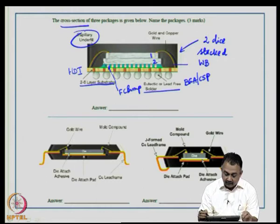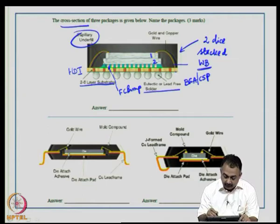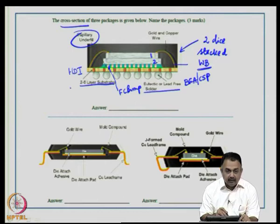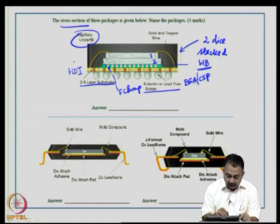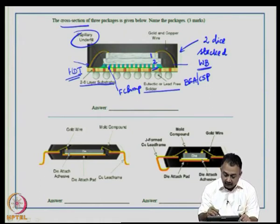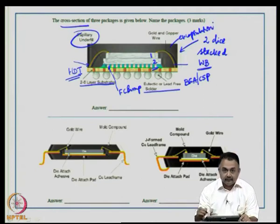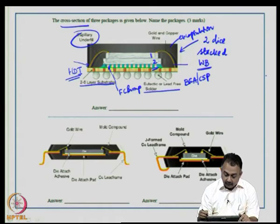The bumps are flip chip bumps, and underfill is used, confirming that die number 2 is a flip chip. Die number 1 is connected by wire bond to the substrate. This particular substrate takes up the interconnections of both die 1 and die 2 — die 1 via wire bond and die 2 via flip chip array connected to the HDI layer. On top, there is an encapsulation.